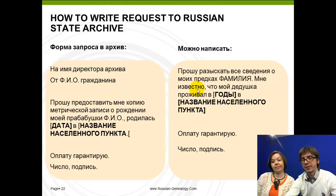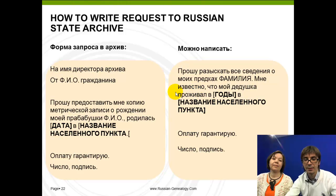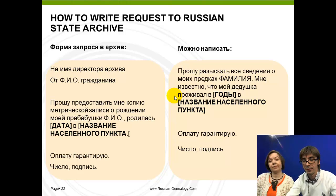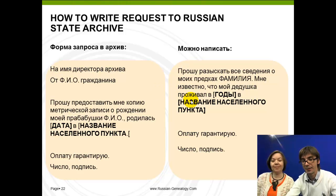Here is an example of how to write a request to Russian state archives. In the upper part of the inquiry, you write to whom you're addressing it, followed by who is asking — your full name. Then you request a copy of a particular record about your relative and include as much data as you know. You should also indicate that you guarantee payment, sign it, and send the original by ordinary mail rather than email — this gives the highest chances of it being processed. If you need help, our experts will assist you.